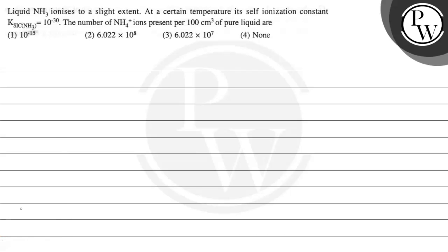Hello, let's read this question. The question says: liquid NH3 ionizes to a slight extent at a certain temperature. The ionization constant K is equal to 10 raised to the power minus 30. Find the number of H+ ions present per 100 centimeter cube of pure liquid. We have four options.